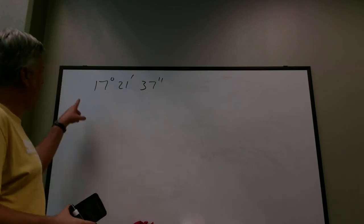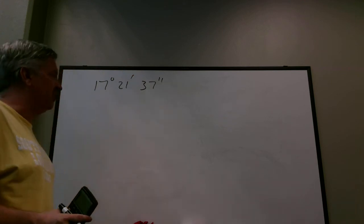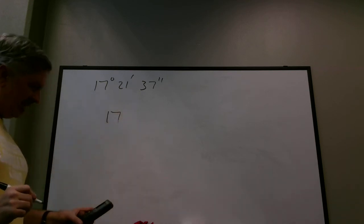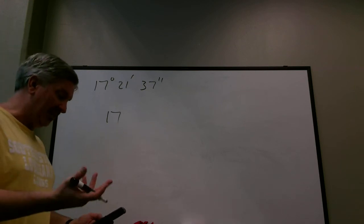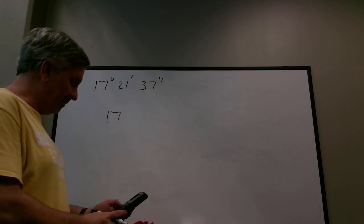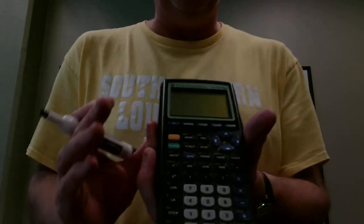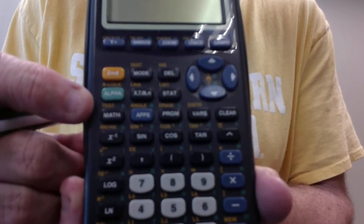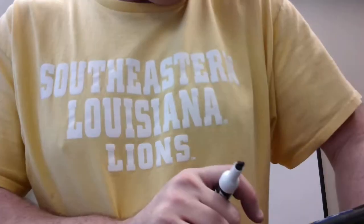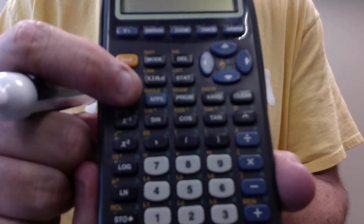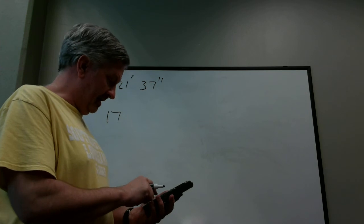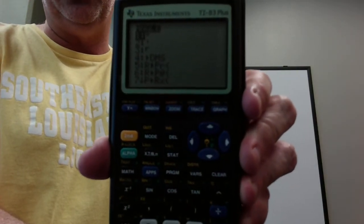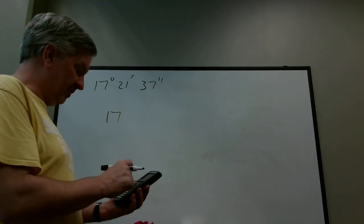To convert 17 degrees, 21 minutes, 37 seconds on the TI-84: type 17, then get the degree symbol from the angle menu (second, then the angle key — it's the first option). Type 21, then go back to the angle menu and choose number 2 for the prime (minutes) symbol. Type 37, then hit alpha plus for the double-prime (seconds) symbol.